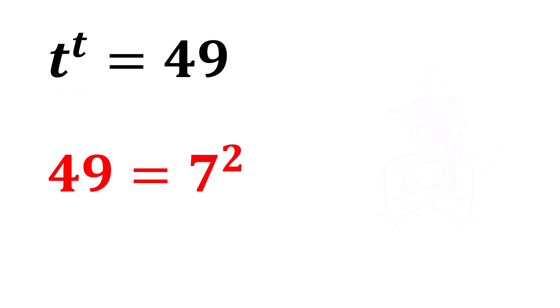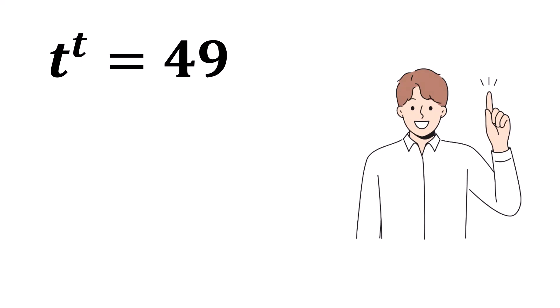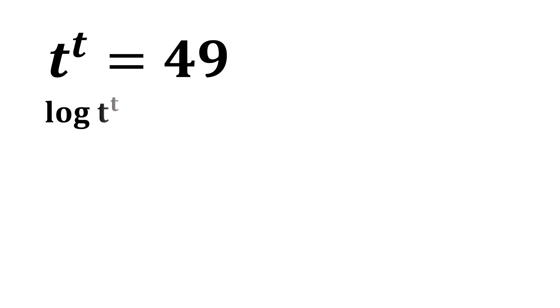7 squared is not the same form as t to the power t. So, 7 is not the solution to this equation. But we'll solve this equation using algebra. Let's apply the natural logarithm to both sides.